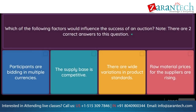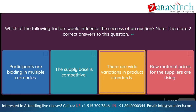Question: Which of the following factors would influence the success of an auction? Note, there are two correct answers to this question. Option 1: participants are bidding in multiple currencies. Option 2: the supply base is competitive. Option 3: there are wide variations in product standards. Option 4: raw material prices for the suppliers are rising.